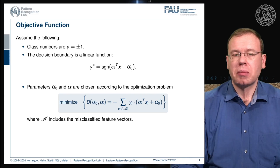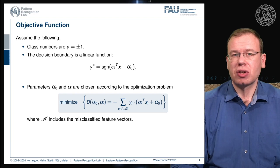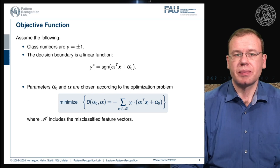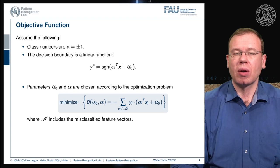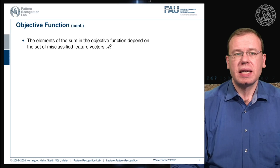For a misclassified sample, the ground truth label yᵢ and the signed distance will have exactly opposite signs, yielding a negative value inside the bracket. We multiply by minus one in front of the sum so that all elements become positive. Minimizing this objective essentially minimizes the loss caused by all misclassifications.